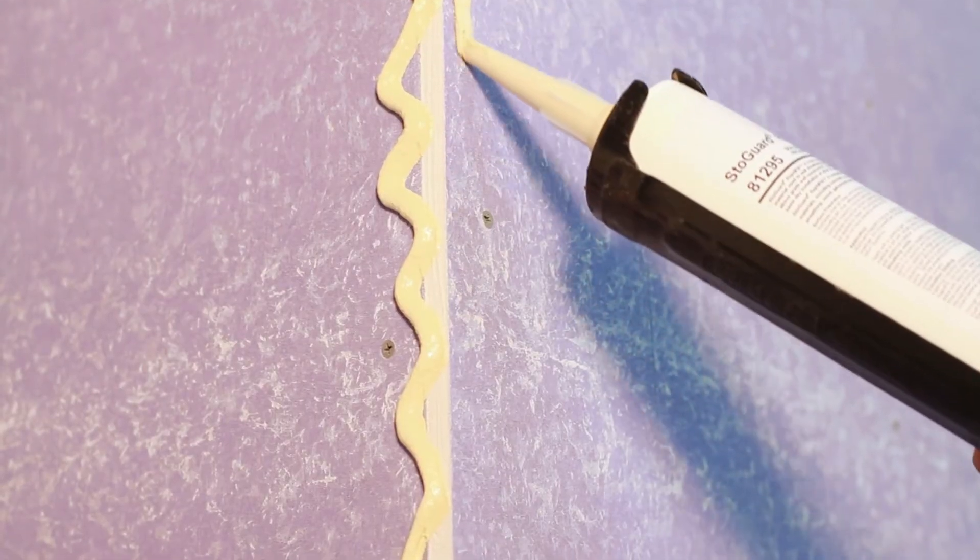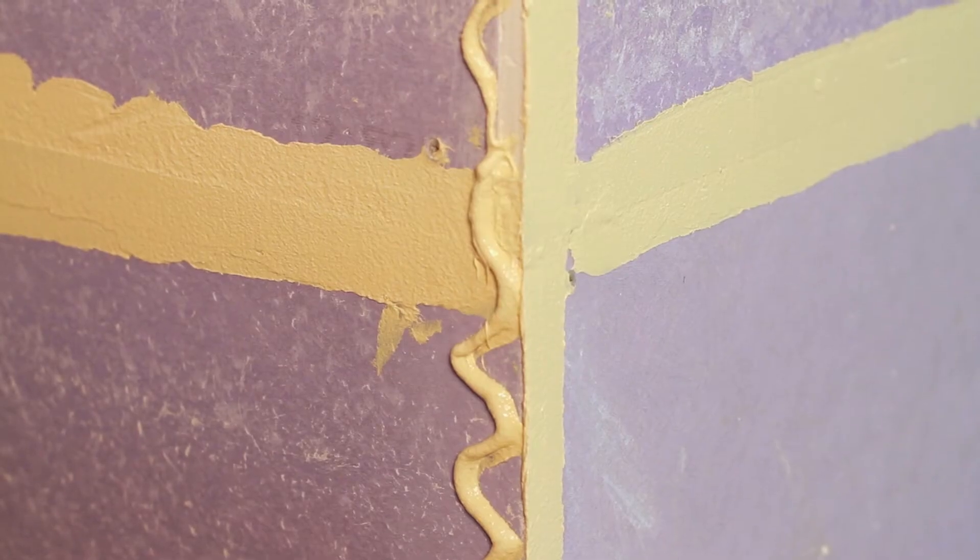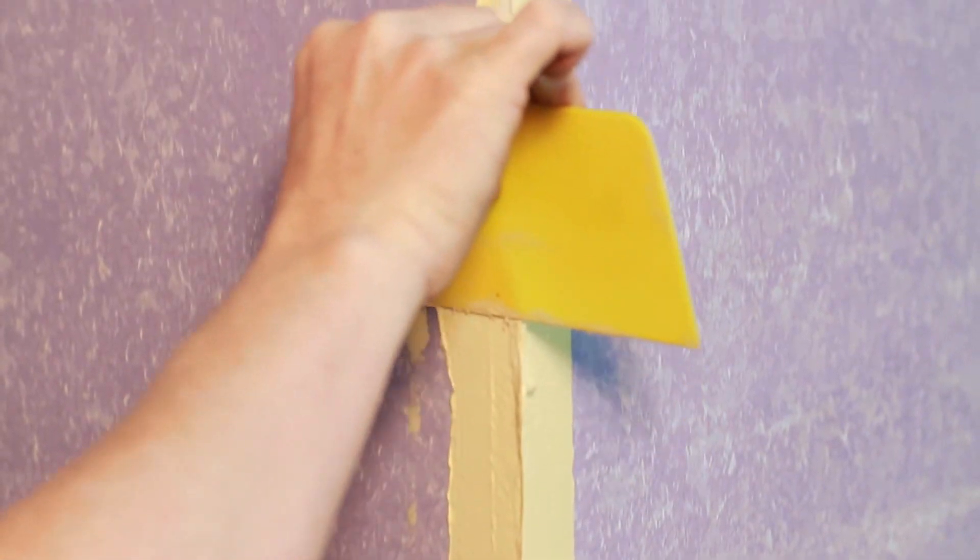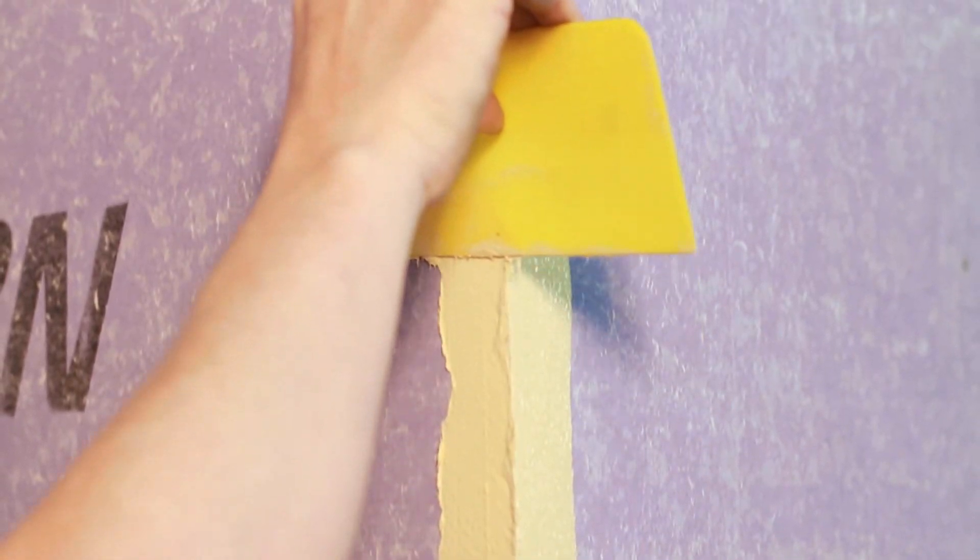This same procedure should be followed to seal inside and outside corners. Stogard Rapid Fill should be tooled while material is still wet. If voids or pinholes appear, seal these with additional Stogard Rapid Fill.